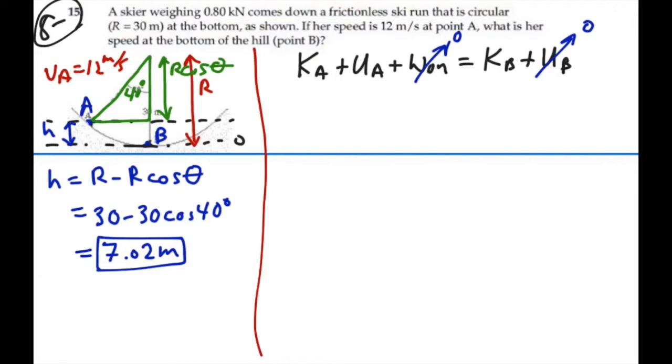So what we're left with is one half the mass times the velocity at A squared plus our gravitational potential energy at A, MGH, is equal to the kinetic energy at B, one half the mass times the velocity at B squared.